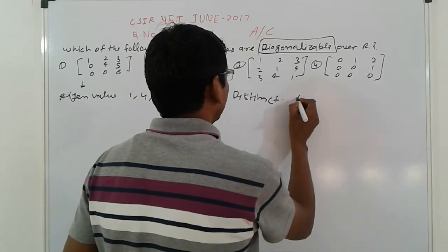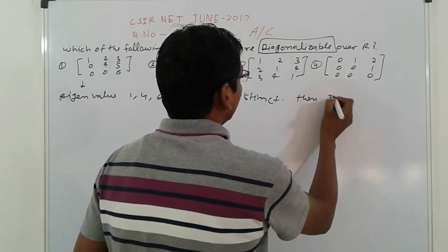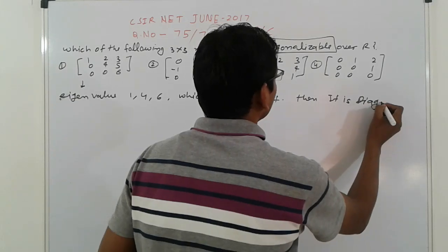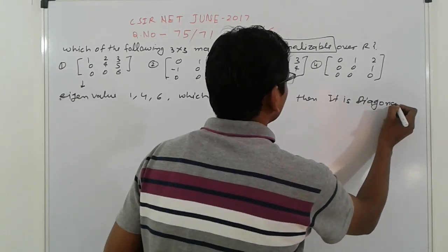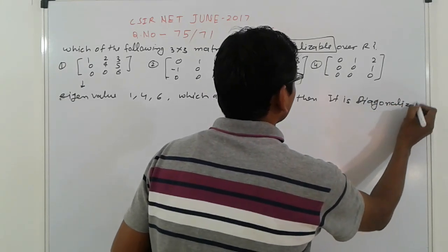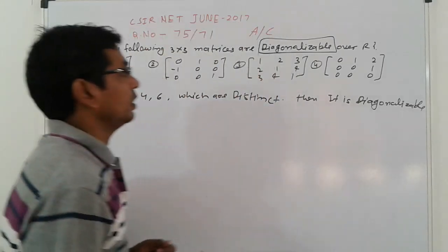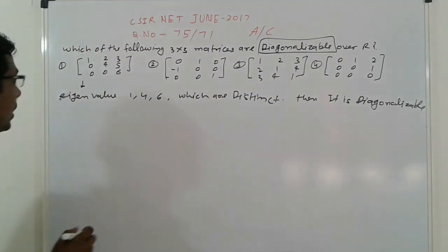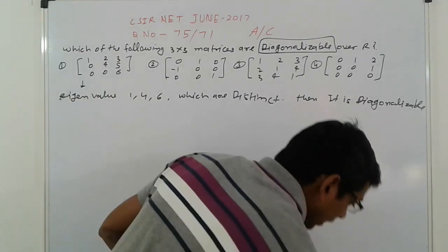Then it is diagonalizable. If the eigenvalues are distinct, then it is diagonalizable. It means the first option is correct.